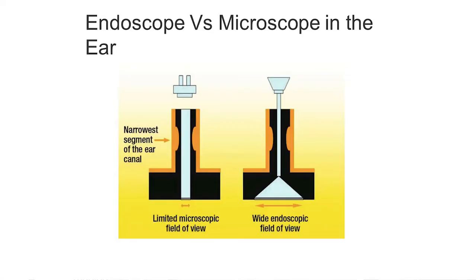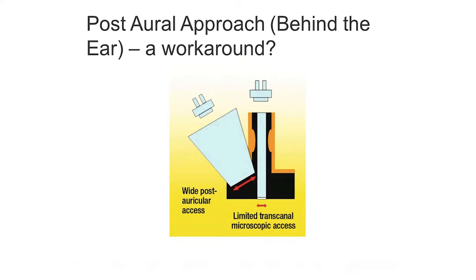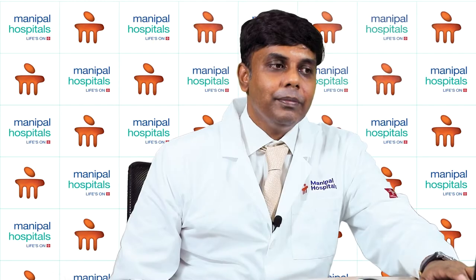To approach the middle ear using a microscope, we have to work around the limitations of the normal anatomy, either by making a post-aural incision or using specula to dilate the external auditory canal. All these approaches end up giving us limited access to the middle ear.